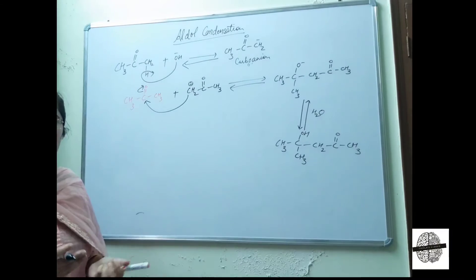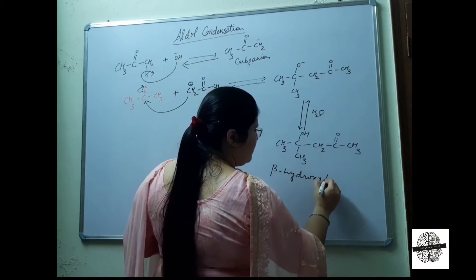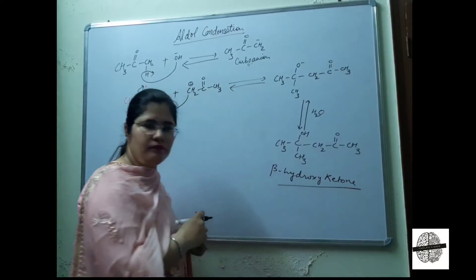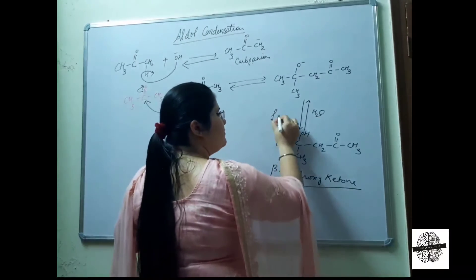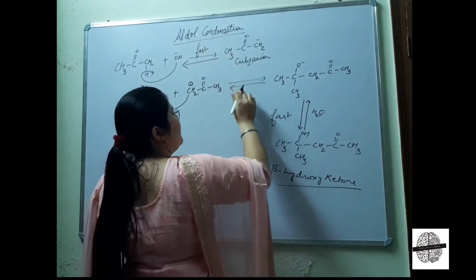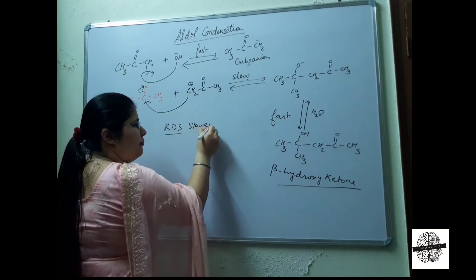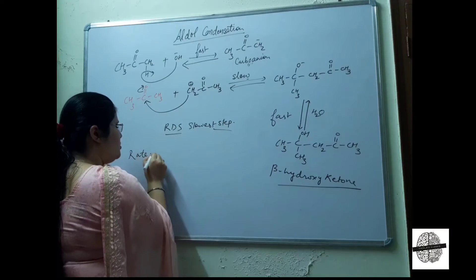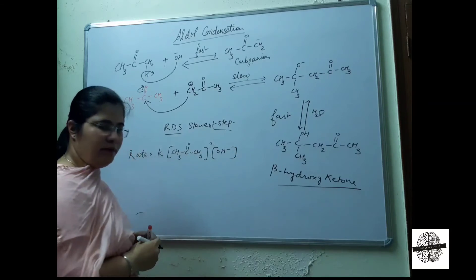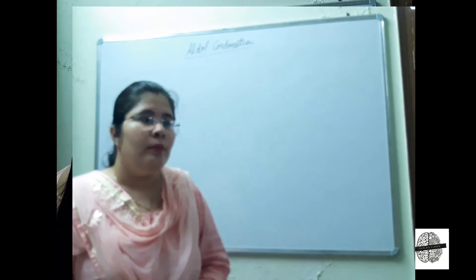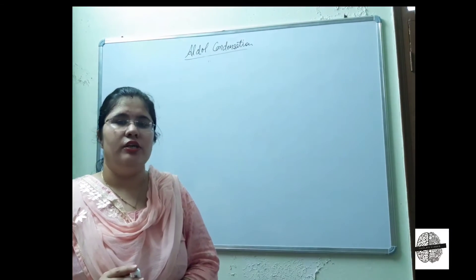This product in case of acetone or ketone is the beta-hydroxy ketone. The fast steps are the proton transfer steps, and the slow step is the carbanion formation — which is the rate-determining step. Therefore, rate = K[CH3COCH3]²[OH⁻]. The reaction between ketones with alpha hydrogens is third order overall. However, in the case of HCHO (formaldehyde), the reaction is second order.